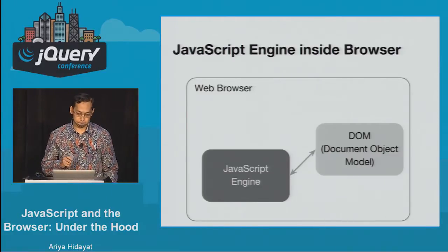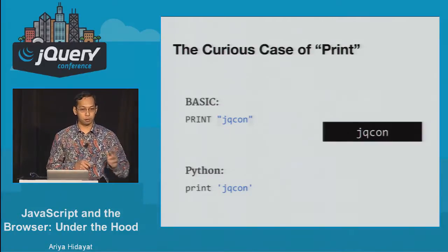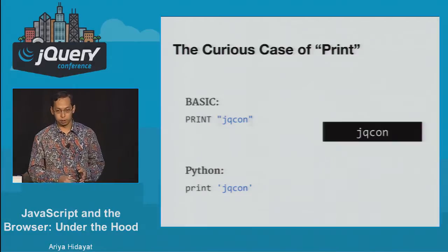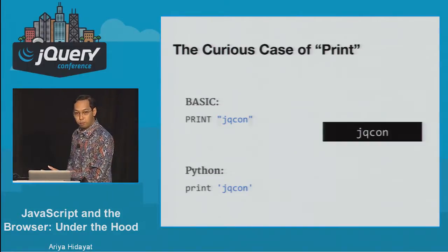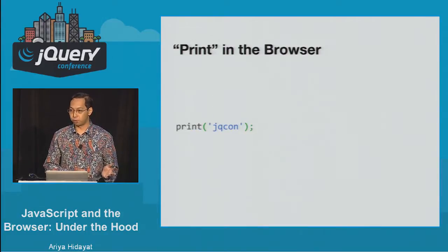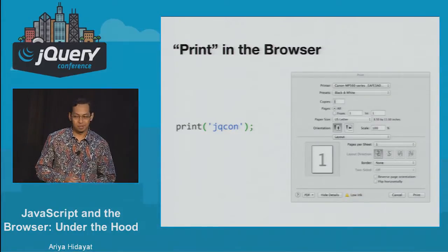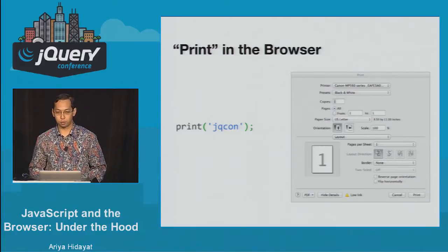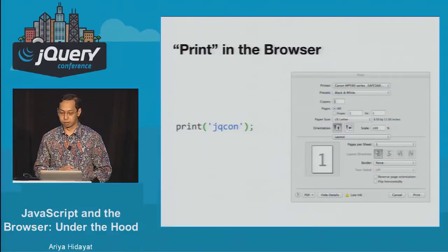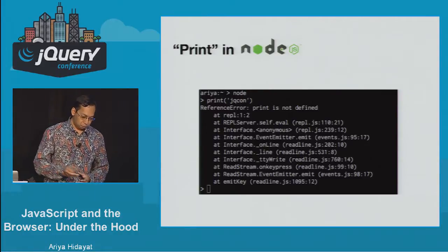Here's a funny thing about JavaScript. In most programming languages there's a 'print' function that displays something to the screen — in Basic, Python, Ruby. But if you go to the browser console and type 'print', what do you get? It won't display your string — it opens a print dialog. And if you try it in Node.js, you get a ReferenceError: 'print is not defined.' As crazy as it sounds, 'print' doesn't exist in the JavaScript world — it's not even part of the standard library.